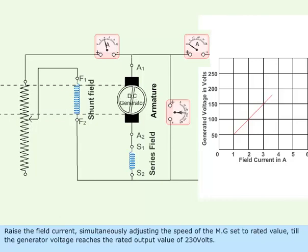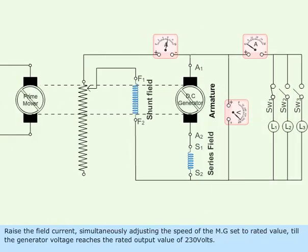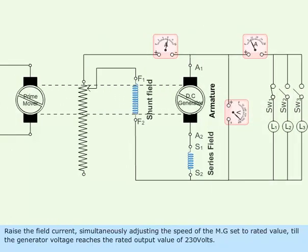Raise the field current, simultaneously adjusting the speed of the MG set to rated value till the generator voltage reaches the rated output value of 230 volts.